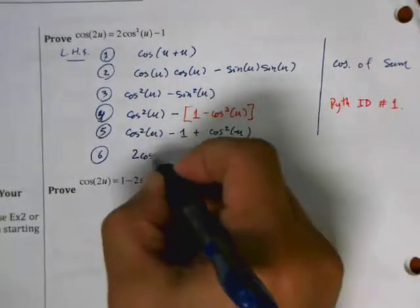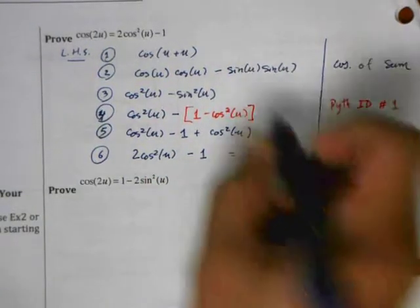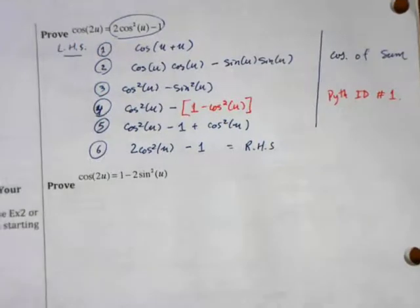From here, it's pretty straightforward. We just have to clean it up a little bit. So I get cosine squared u. Distribute this negative sign, so I get negative one plus cosine squared u. Then just simplify and combine the like terms. So now I get two cosine squared minus one, which is the same thing as the right hand side. That completes the proof.